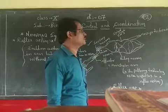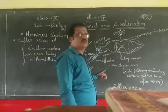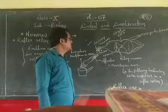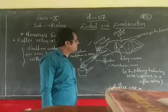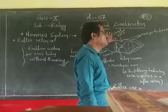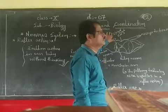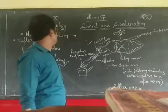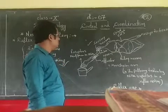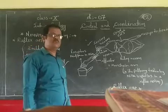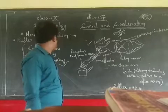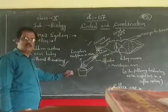In the case of reflex action, some components play an important role. First, the sense organs — that is, the receptors. Then sensory neurons, then motor neurons, then relay neurons, and also the spinal cord. The spinal cord is a part of the central nervous system. In this way, by the help of these important organs, we are controlled and carry out these types of emergency actions in our body, controlled by the organs present in our nervous system.